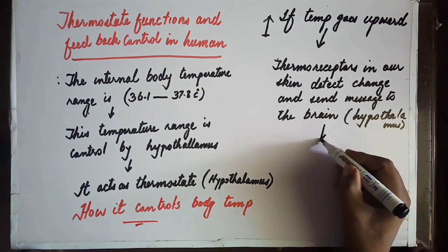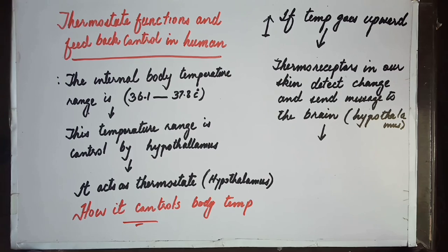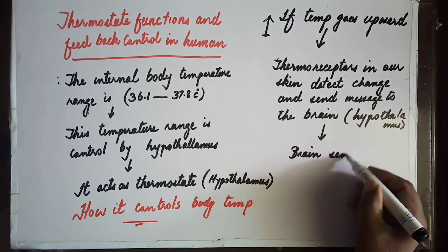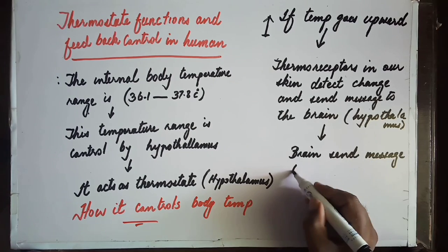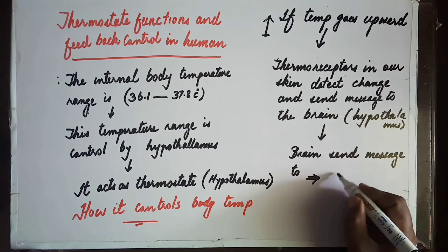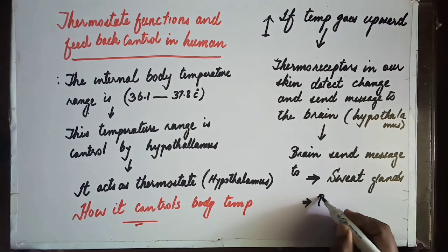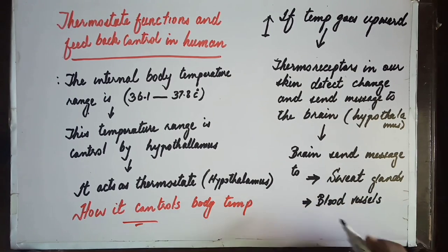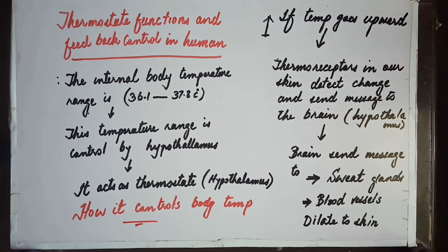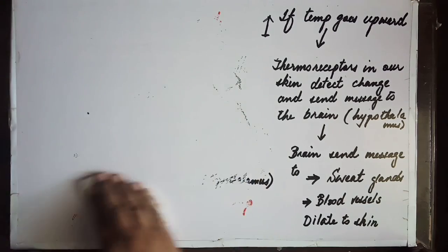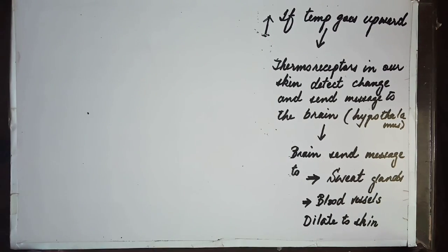The receptors present in the skin receive the signal and send it to the hypothalamus. Our brain then sends this message to different body parts — to the sweat glands and to the blood vessels. The blood vessels dilate (vasodilation). The sweat glands produce sweating, evaporation occurs, and cooling happens. Through vasodilation, blood moves to the skin and heat dissipates to the external environment.